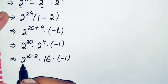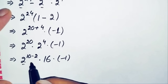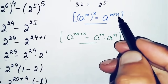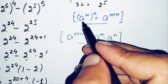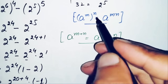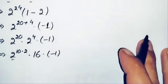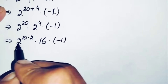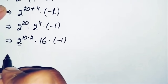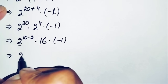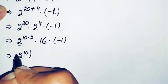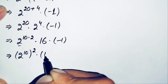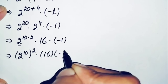For the term 2^20, we use the exponential property a^(m×n) = (a^m)^n. We can write 2^20 as 2^(10×2), which equals (2^10)^2. So the expression becomes (2^10)^2 × 16 × (−1).